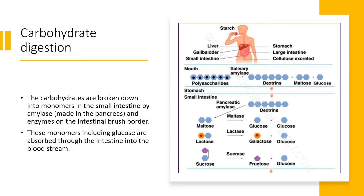Let's talk about carbohydrate digestion. The carbohydrates that enter my digestive system are broken down into monomers in the small intestine by enzymes such as amylase, which are made in the pancreas, as well as enzymes on the intestinal brush border — meaning enzymes in the wall of the small intestine that help break down carbohydrates. These monomers, including glucose, are absorbed through the intestine and enter the bloodstream. Essentially, starch is broken down into glucose, and the glucose is absorbed.